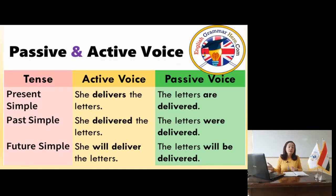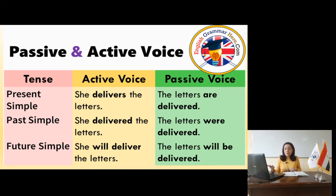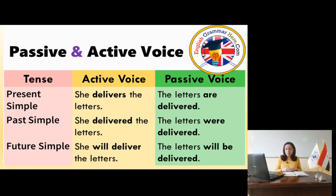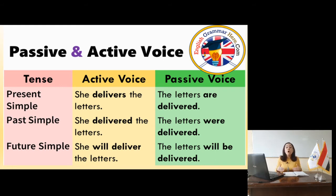Moving to the next slide — we have many examples across all tenses. For present simple: 'She delivers the letters.' The rule is object + verb to be + past participle. The object is 'the letters.' Verb to be in the present simple is am/is/are — for 'the letters' we use 'are.' Then the past participle: delivered. So: 'The letters are delivered,' optionally adding 'by her.' For past simple: 'She delivered the letters' becomes 'The letters were delivered,' because 'were' is verb to be in the past simple.